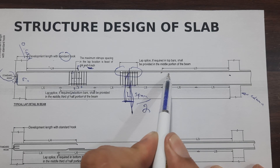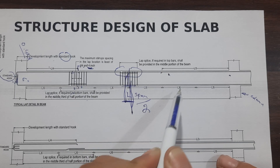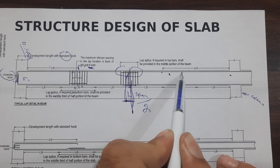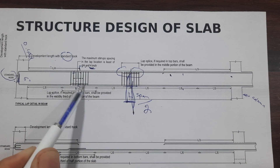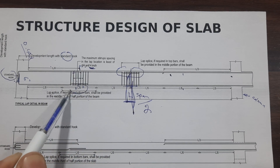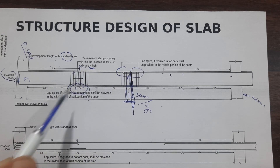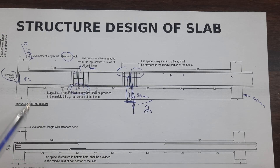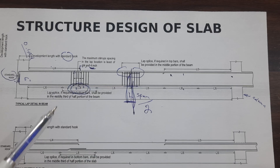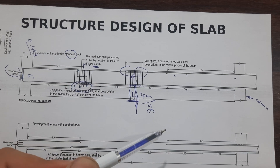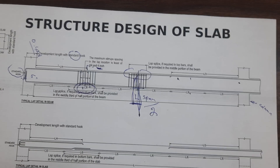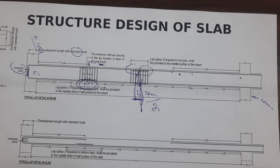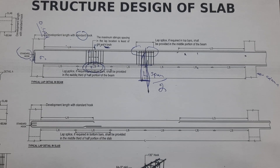You can see here this is L/4. If lapping is required, you can provide it at the bottom portion but not at the upper portion. If required, you can provide after L/4 or at the distance of L/6, but do not provide at L/2. Do not provide at L/4. These are some important technical terms for the beam.